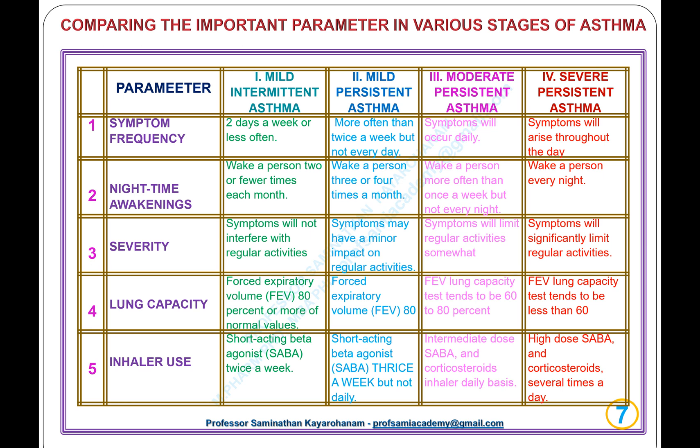Stage 2, mild persistent asthma: symptoms occur more often than twice a week but not every day; nighttime awakenings 3 or 4 times a month; symptoms may have a minor impact on regular activity; FEV at 80% or more; SABA use three times a week but not daily.